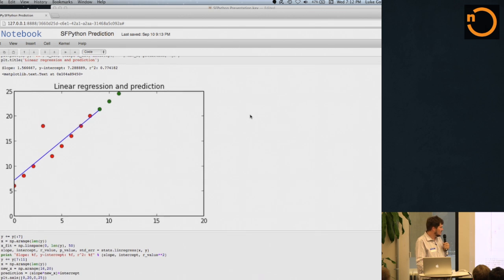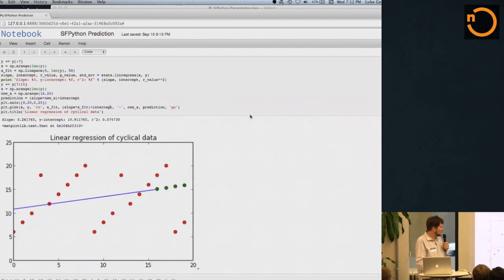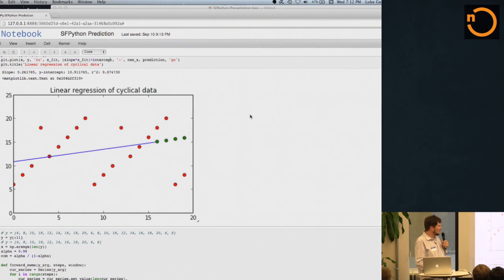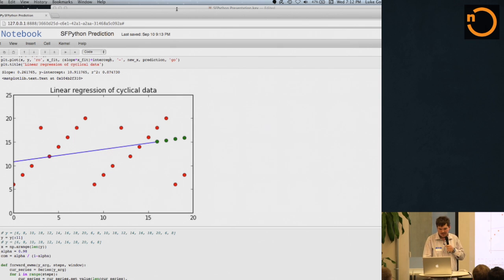But now what happens if this data is cyclical? Let's try this. Oh, well, that's not so good. So this is that same pattern repeated twice, and we do a linear regression for the historical data, and then you can see that the predicted data doesn't actually correspond to the actual data, assuming the pattern is cyclical. So we can try to do something a little more sophisticated.